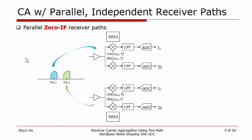The conventional way to receive two carriers is with two independent zero-IF receivers, each with its own LNA, quadrature down-conversion mixer, baseband low-pass filter, baseband ADC, and synthesizer. In other words, every block is duplicated for each carrier. The question is: is there a more efficient way of doing this?